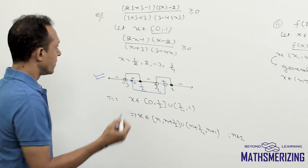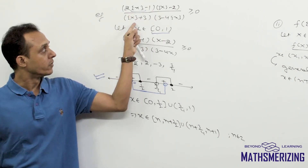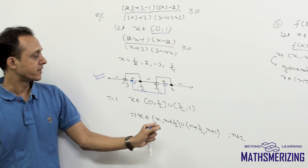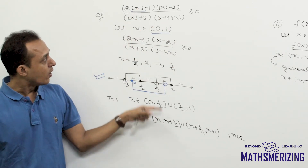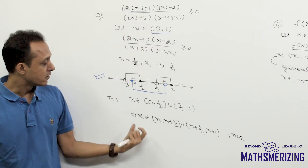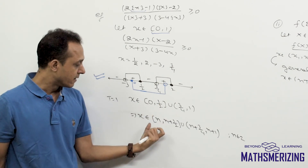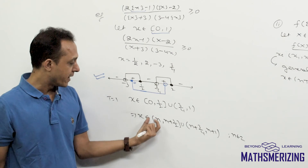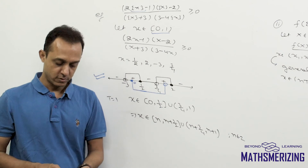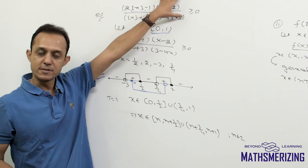In any question that involves only the fractional part function — where there is no other function and not even a single plain x — we can always find the solution between 0 and 1. Since the fractional part function is periodic, we can generalize the result by adding n. So the answer is x ∈ [n, n + 1/2] ∪ (n + 3/4, n + 1]. This is how we use the periodicity of the fractional part function to solve equations and inequalities.